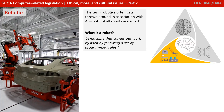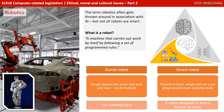Finally we come to the term robotics, which often gets thrown in and associated with AI, but not all robots are smart. A robot is simply a machine that carries out work by itself by following a set of programmed rules. Robots can fall broadly into two categories. We have what are known as dumb robots — they simply repeat the same task over and over, and no AI is involved.